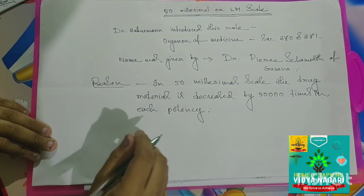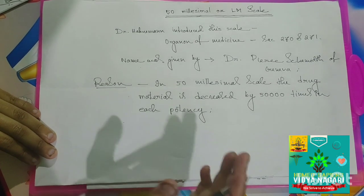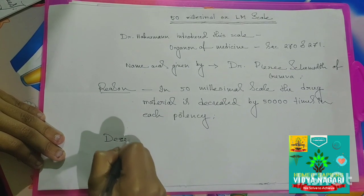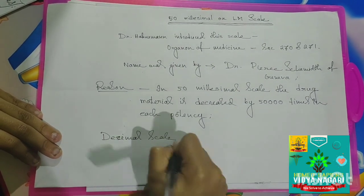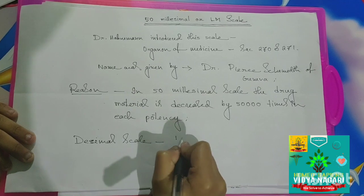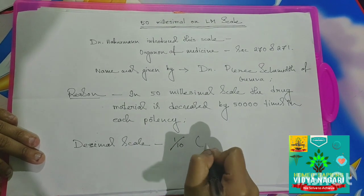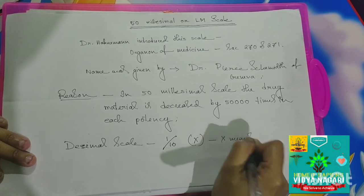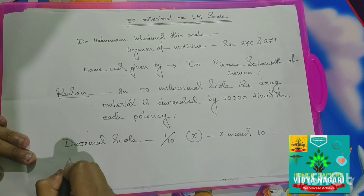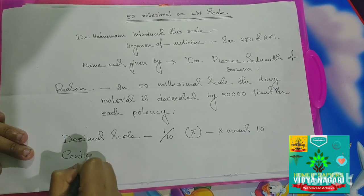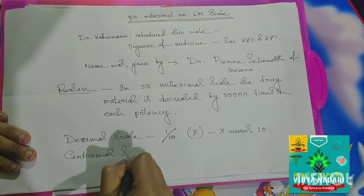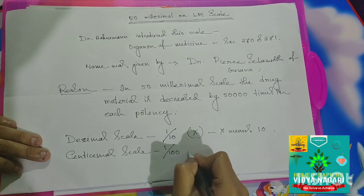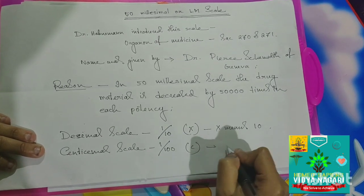Let me give a brief description about the other scales. In the decimal scale, the ratio is 1 by 10 and we denote it by X, where X means 10. In the centisimal scale, the ratio is 1 by 100 and we denote it by C, where C means 100.